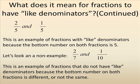Let's look at a non-example: 2 sevenths and 1 tenth. This is an example of fractions that do not have like denominators because the bottom number on both fractions is different. The bottom number on the first fraction is 7 and the bottom number on the second fraction is 10.